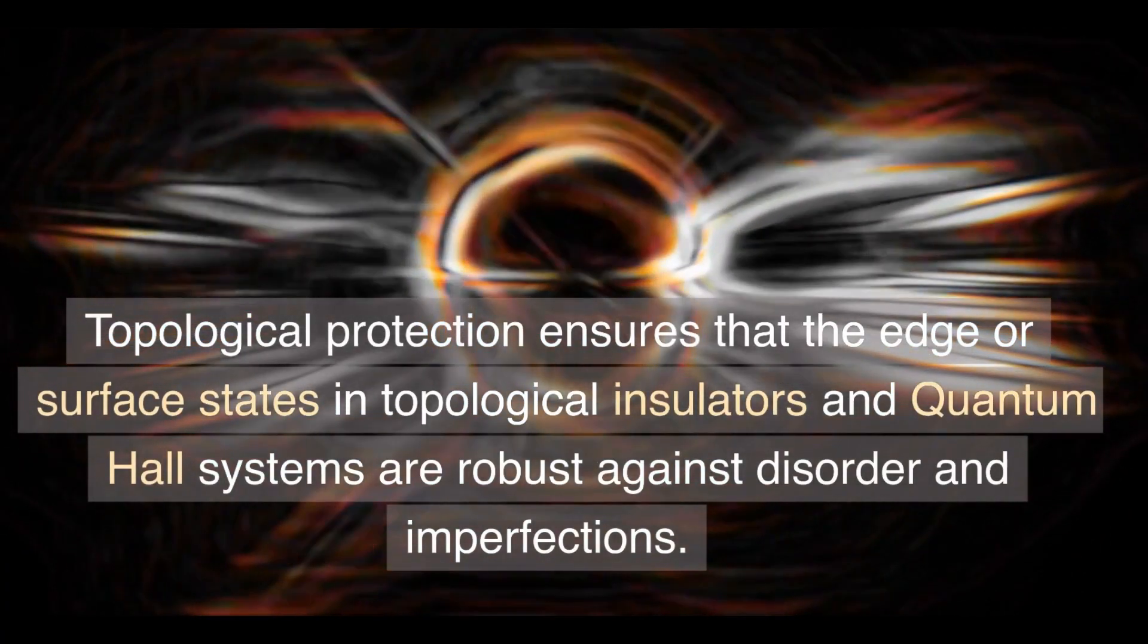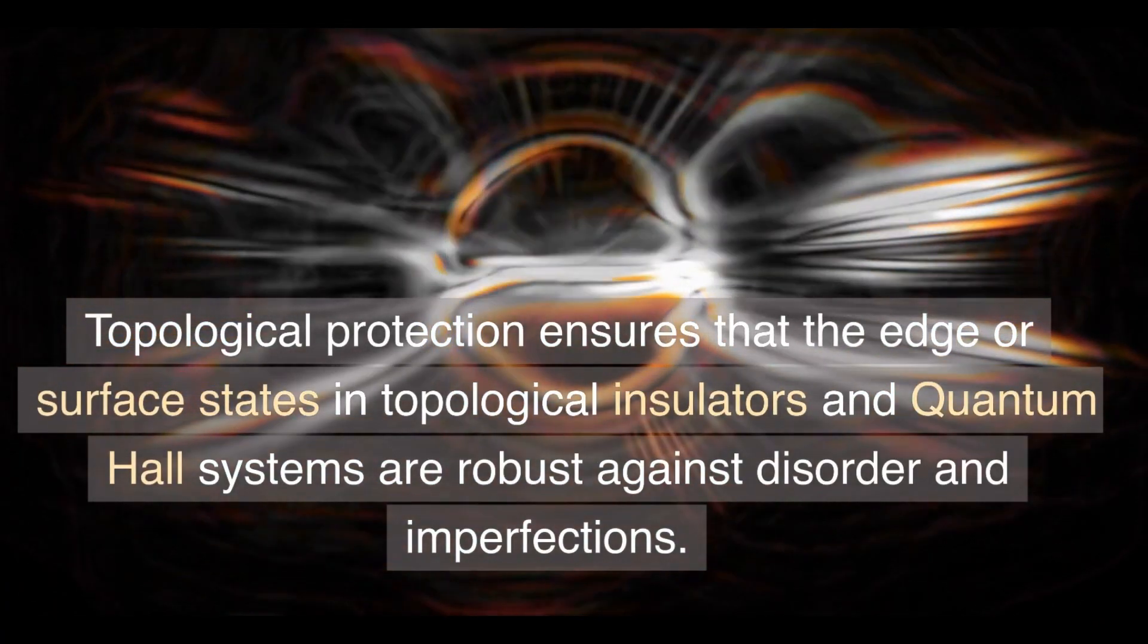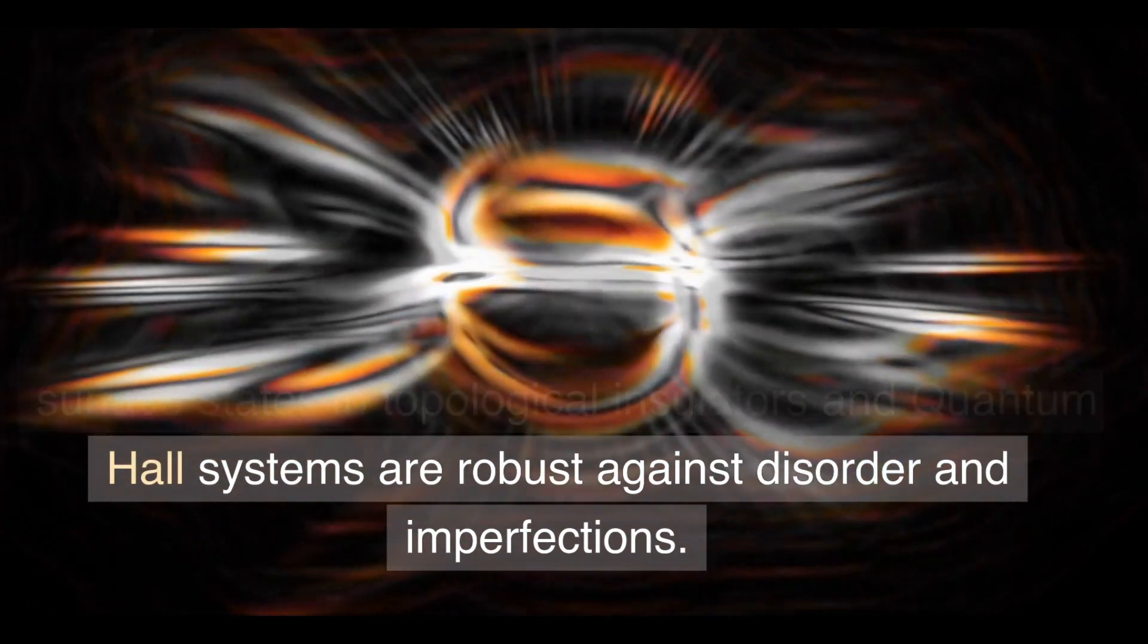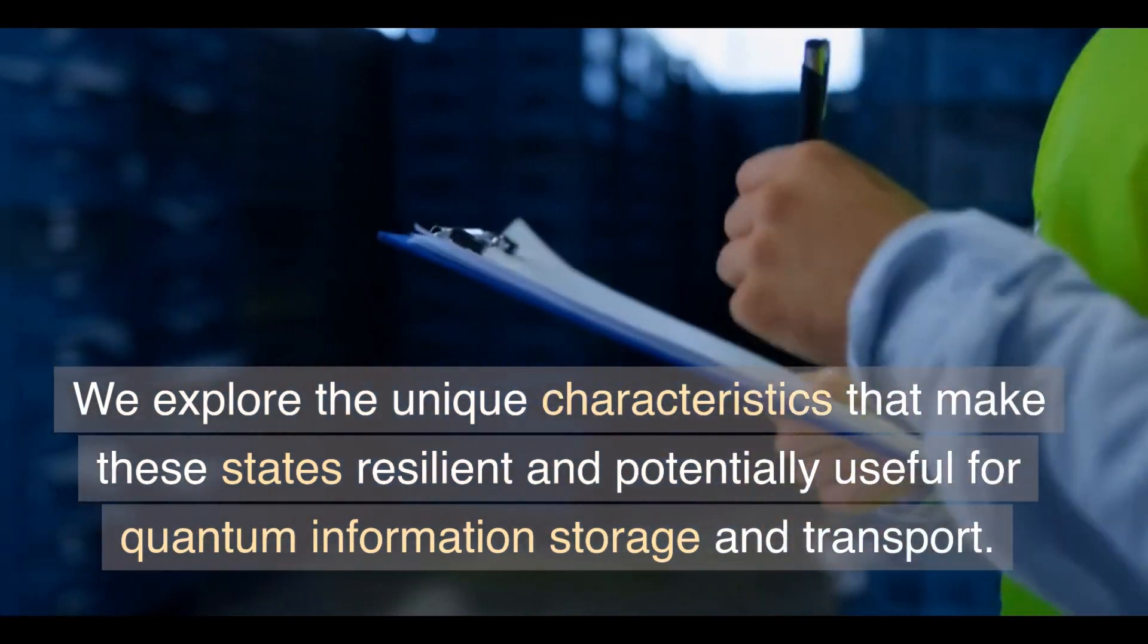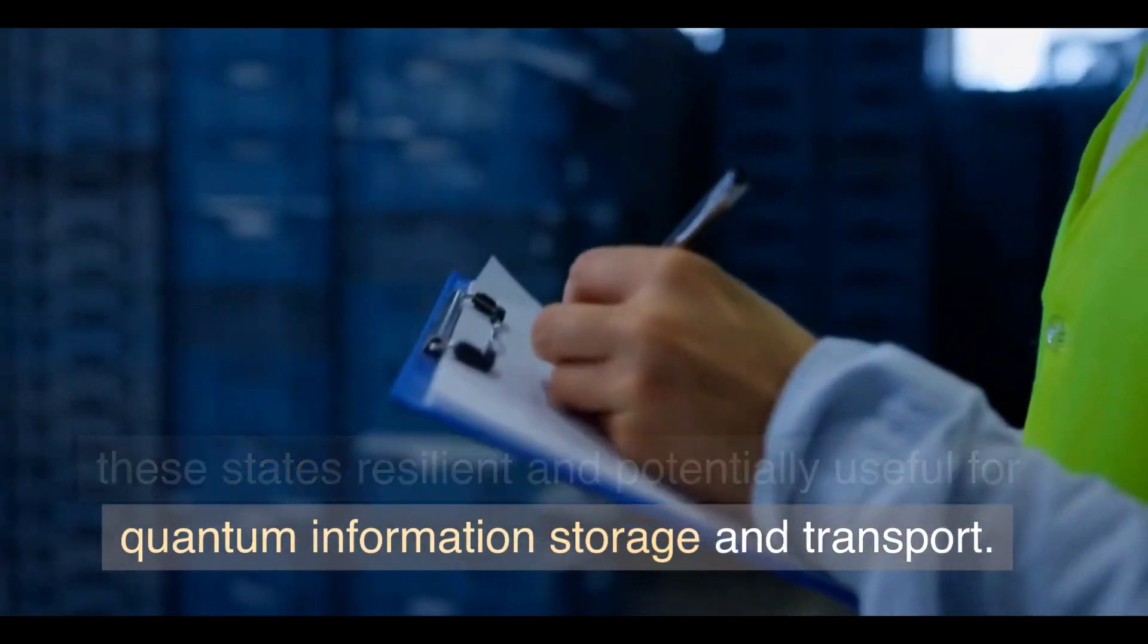Topological protection ensures that the edge or surface states in topological insulators and quantum Hall systems are robust against disorder and imperfections. We explore the unique characteristics that make these states resilient and potentially useful for quantum information storage and transport.